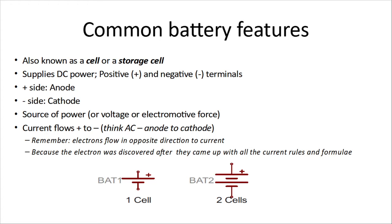Think AC — anode to cathode. Now, a little quirk of physics. Long ago, when people discovered electricity, they decided that one side was plus and the other minus, and that current flows from plus to minus. But electrons actually flow in the opposite direction to current. That's because the electron was discovered after all the current rules and formulas were established, and they didn't want to change everything since the textbooks were already written.